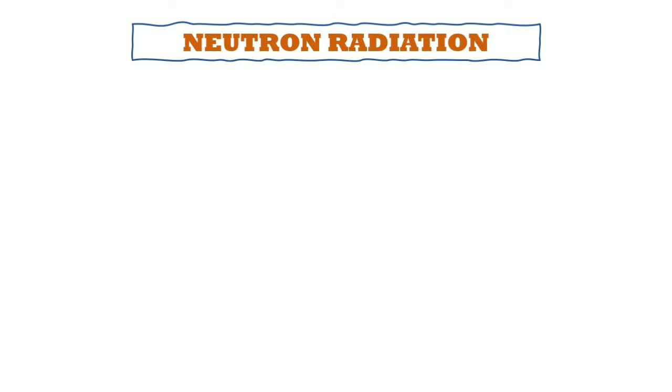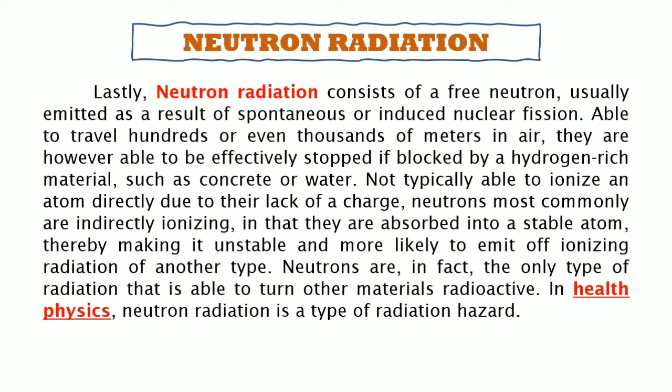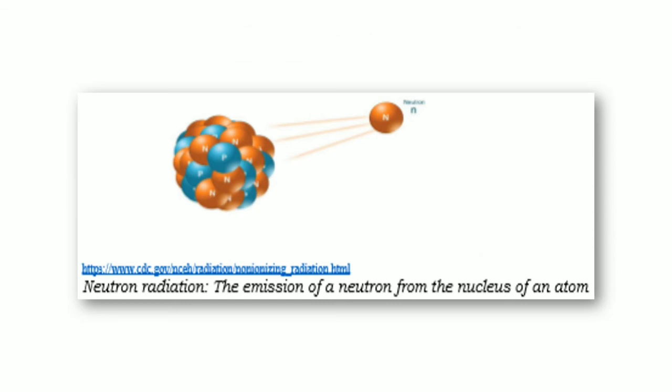Lastly is neutron radiation. It consists of a free neutron, usually emitted as a result of spontaneous or induced nuclear fission. Able to travel hundreds or even thousands of meters in air, neutrons can, however, be effectively stopped if blocked by a hydrogen-rich material such as concrete or water. Not typically able to ionize an atom directly due to their lack of charge, neutrons most commonly are indirectly ionizing — they are absorbed into a stable atom, making it unstable and more likely to emit ionizing radiation of another type. Neutrons are, in fact, the only type of radiation able to turn other materials radioactive. In health physics, neutron radiation is a type of radiation hazard.